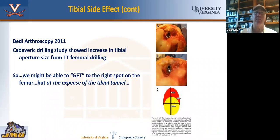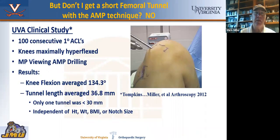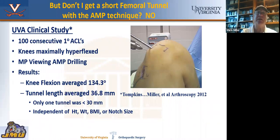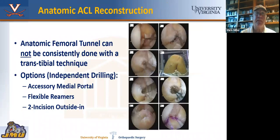The best way to get to the right spot is with independent tunnel drilling, not transtibial. We did a study here at UVA with 100 consecutive ACLs with anterior medial drilling and found the tunnel length is fine — that was one of the early criticisms of the independent anterior medial portal. If you hyperflex the knee, you get adequate length. The three options — accessory medial portal, flexible reamer, and outside-in — are the way to go with independent drilling and anatomic femoral tunnel placement.